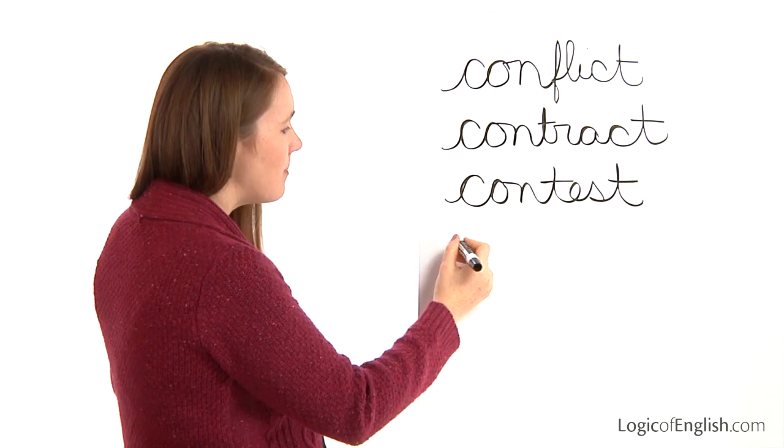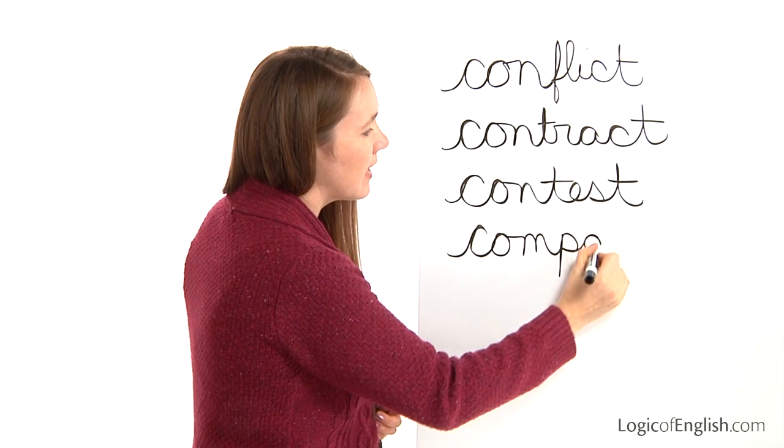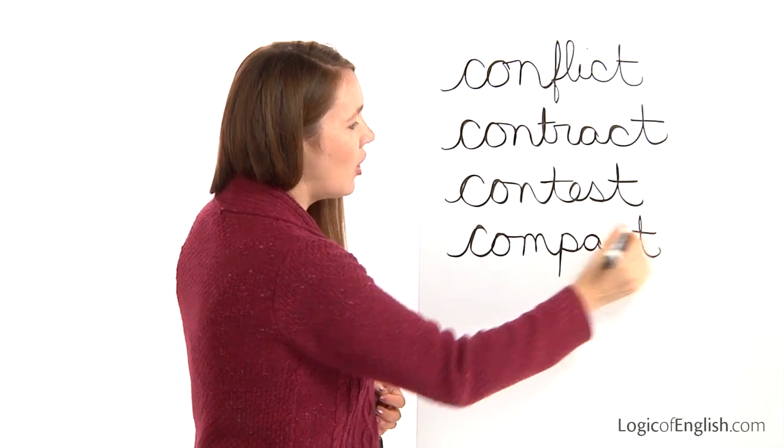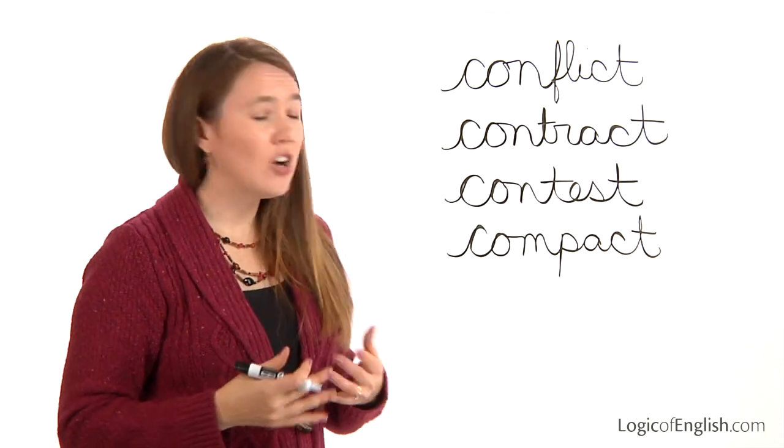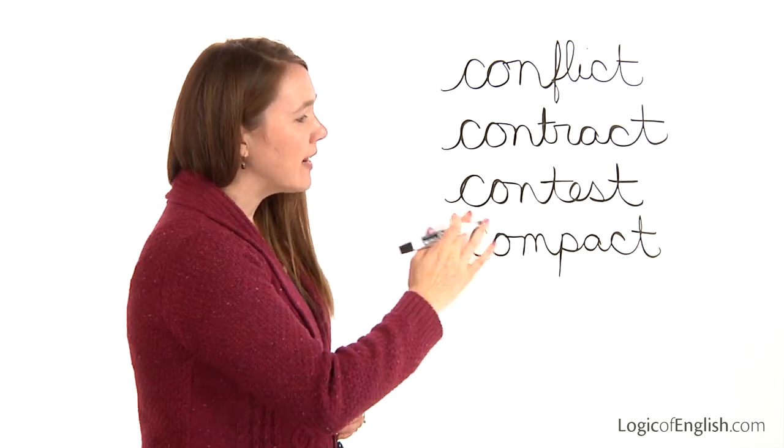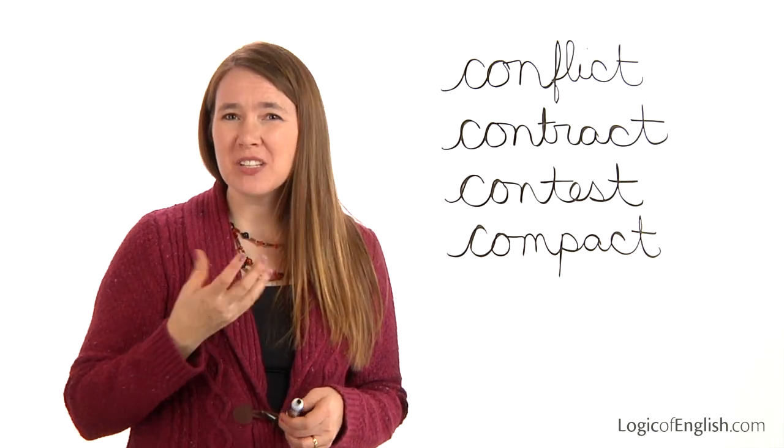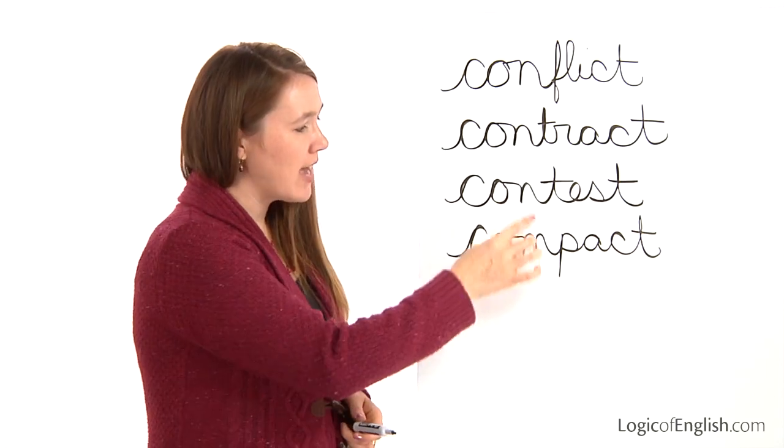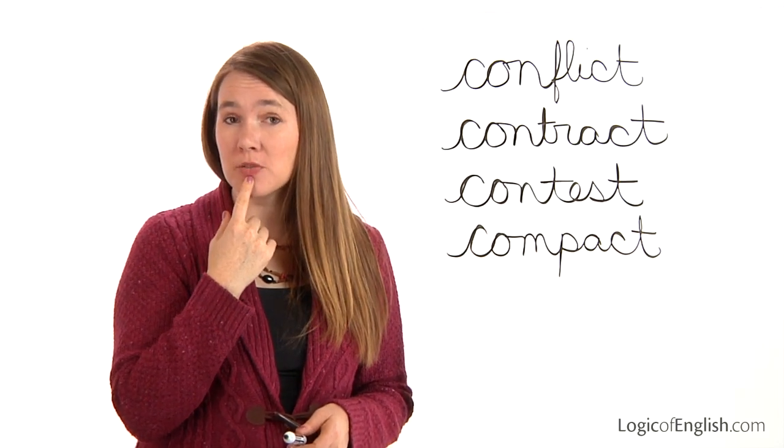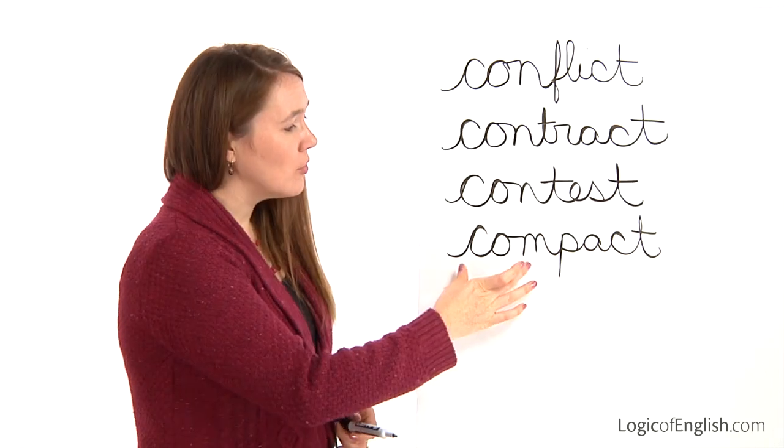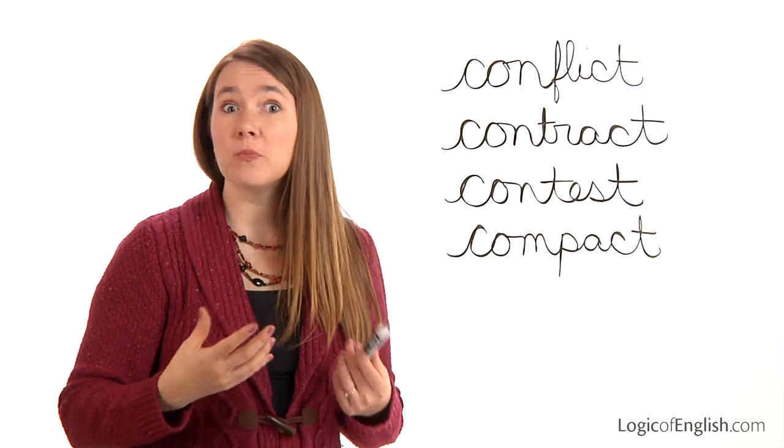The next word is compact. Now with compact, we need to first look at the fact that the con changed to com. And in Latin, there is this thing called assimilation, where if you try to say con-pact, con-pact, you'll notice it's very difficult to say. But if you change that n to an m, compact, because the p is on your lips as well, it's simpler to say. And so Latin prefixes can assimilate to the first letter for ease of pronunciation.